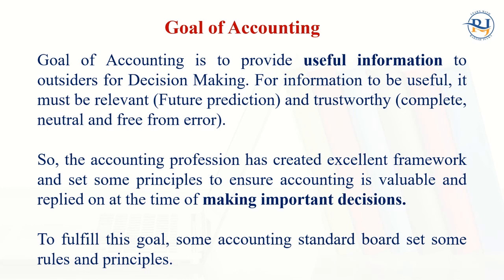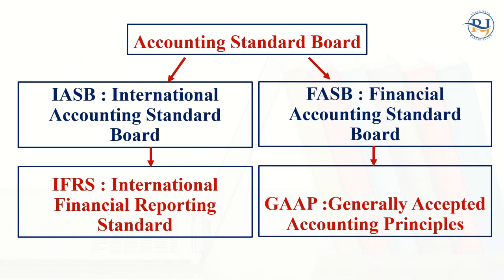To fulfill this goal, some accounting standard boards set some rules and principles. Accounting standard boards are broadly divided into two parts. The first board is the IASB, which is known as the International Accounting Standard Board, where principles and standards are prepared. Those standards are known as International Financial Reporting Standards, IFRS. On the other side, another board is there known as the Financial Accounting Standard Board, and the Financial Accounting Standard Board created GAAP, which is Generally Accepted Accounting Principles.